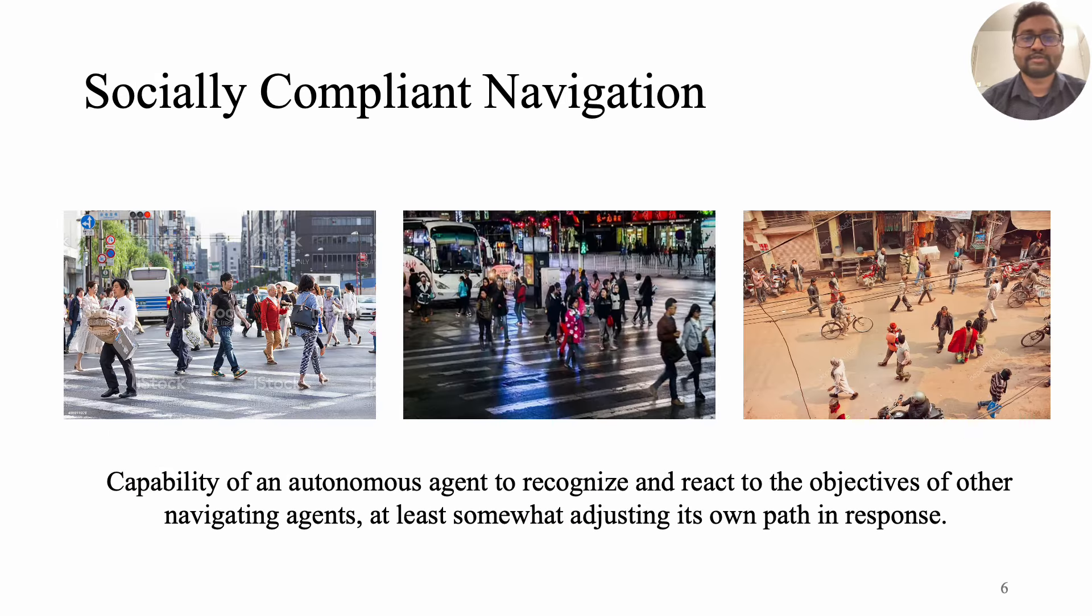The human demonstration we just saw is called social-compliant navigation which is ability of an autonomous agent to identify and respond to the intentions of other navigating entities by appropriately adjusting its own trajectory. We expect all the robots navigating in the wild to be socially compliant.